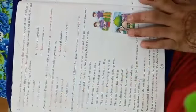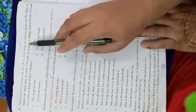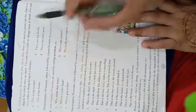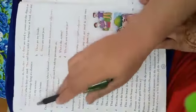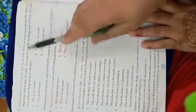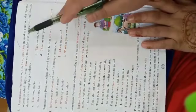This and these refer to the things nearer at hand, and that or those refer to the things laying at a distance. So this and these point out the nearer things, and that and those point out the distance things.